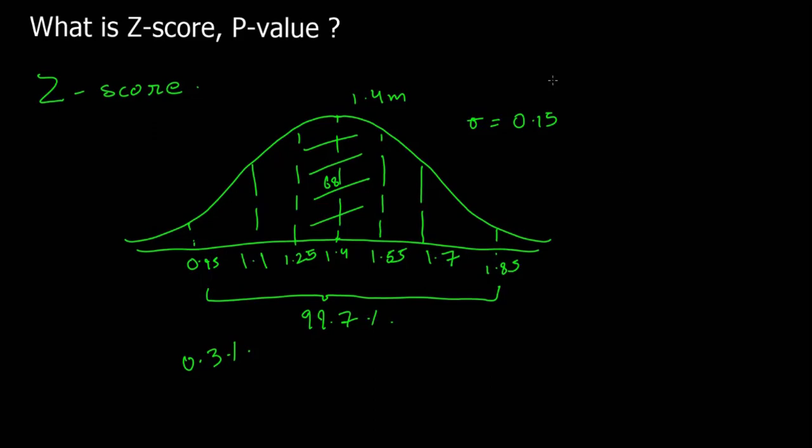So in terms of Z-scores, the graph will look like this: this is 0. Then the first standard deviation to the right is plus 1. That is plus 1 of Z-score. And then minus 1, then minus 2, then minus 3. And similarly, plus 2 and plus 3. So this is the concept of Z-score.